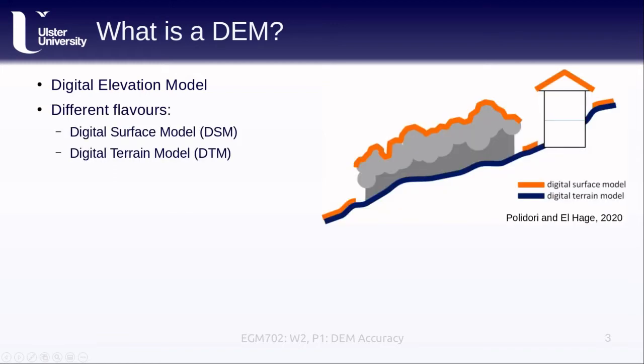We have different flavors of DEMs. We might have a digital surface model, where we have the ground surface as well as the surface of anything on top of the ground, such as trees or buildings. When we're working with optical data, such as the air photos that you worked with last week, this is primarily what we're going to be generating.